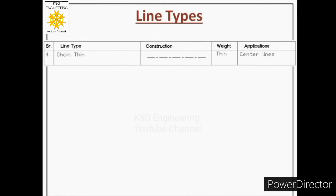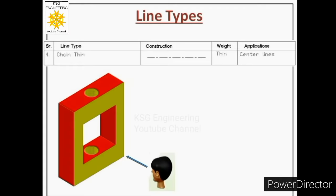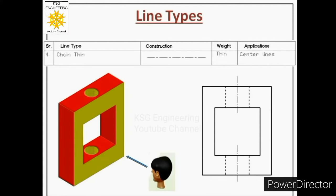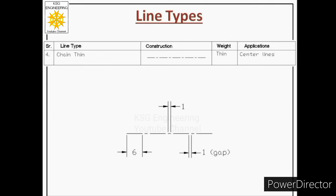Next, we will talk about the chain thin line. Its construction is chain and its weight is thin. It is used to represent center lines — for example, the axis of both holes in a front view is drawn as chain thin lines, indicating axis of symmetrical parts or axis of symmetry of the object. Its construction is a chain of long and short dashes: the long dash is 10 mm or 6 mm, the short dash is 1 mm, and they are separated by a gap of 1 mm.